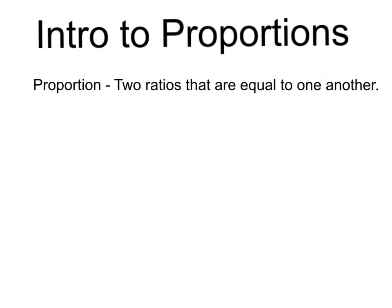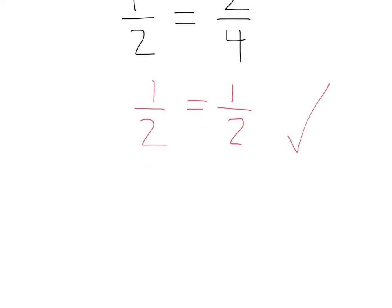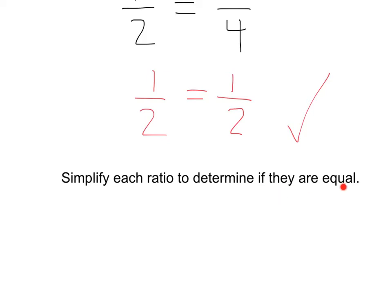We're going to be doing a small introduction to proportions. A proportion is when two ratios are equal to one another. For example, 1/2 is equal to 2/4. We've got a ratio of 1 to 2 and a ratio of 2 to 4, and we know that 1/2 is indeed equal to 2/4. If we wanted to check this, we could simplify 2/4: 2 goes into the top once, the bottom twice, and we'd end up getting 1/2 equals 1/2, which is true. So that's our first method to determine whether or not two ratios form a proportion — simplify each ratio to determine if they are equal.